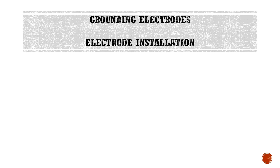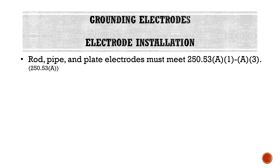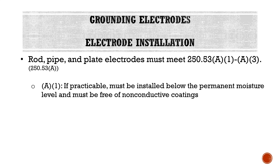Now let's talk about how to install those electrodes — applicable only to ones that we ourselves would install. Rod, pipe, and plate electrodes must meet 250.53 A1 through A3. A1: if practical, must be installed below the permanent moisture level and must be free of non-conductive coatings. The idea of the permanent moisture level is we want it installed below the freeze level — if it's below where the ground gets moist, it won't freeze in cold temperatures, which would impede conductivity to the ground around it. And we don't want any non-conductive coating because that defeats the purpose of establishing a conductive path to the Earth.